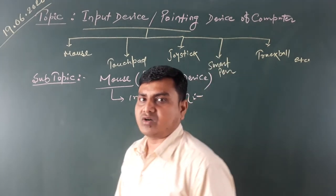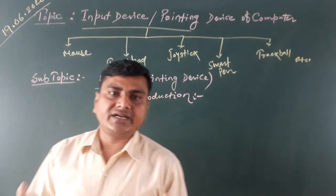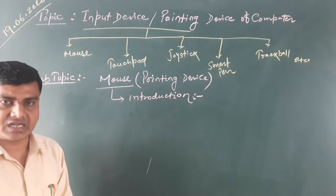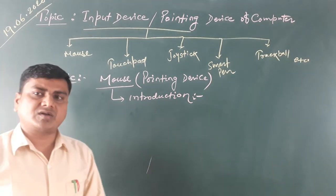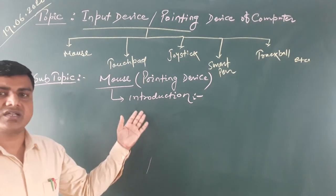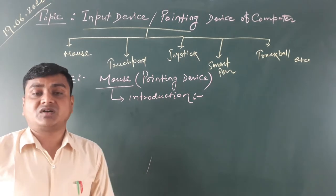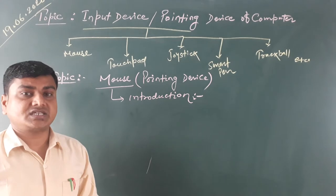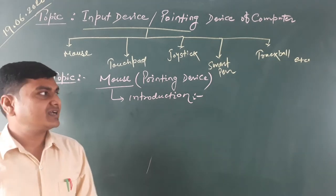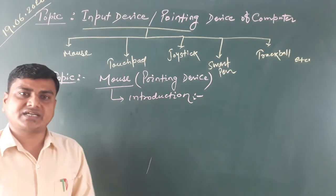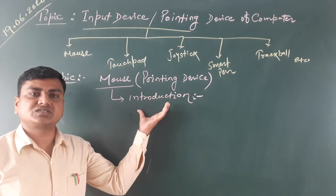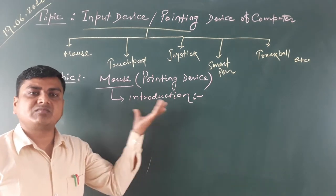The mouse is a small device which looks similar to a general mouse — a normal rat. That is why this computer device is also called a mouse; its shape and size resemble a rat.